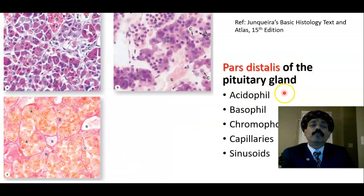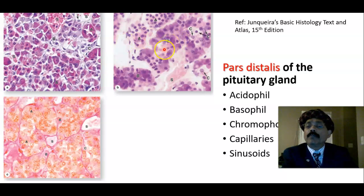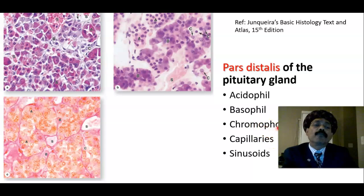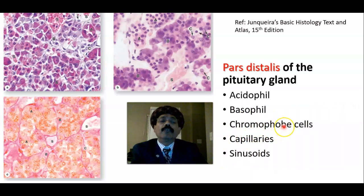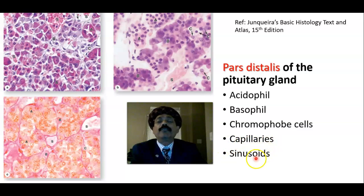In the pars distalis of the pituitary gland we have the acidophil cells, the basophil cells, and the chromophobe cells. Basophil cells pick up the basic dye; acidophil cells pick up the acid dye. The chromophobe cell has no granule — it may be a precursor of other cells and has no other significant function. We also have fenestrated capillaries and sinusoids.